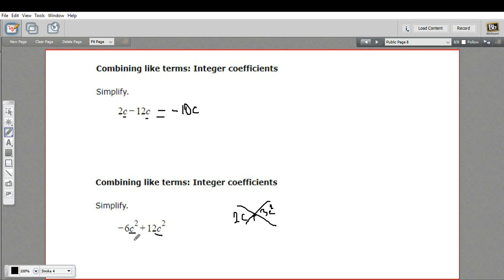But if you've got 2 C squareds here, you can combine those. Those are like terms. So as long as the letter and the exponent are the same, they're like terms.